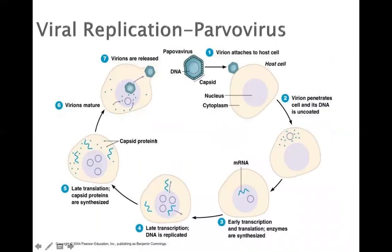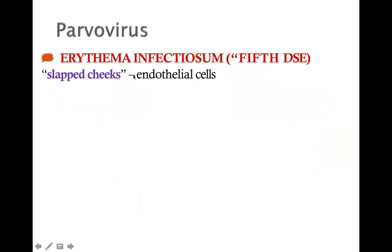This is the viral replication of the parvovirus. The first step: the virus attaches to its host cell. The virus penetrates the cell and its DNA is uncoated. Once uncoated, its mRNA undergoes early transcription and translation, and enzymes are synthesized. After this step, late transcription occurs — DNA is now ready for replication. Once replication takes place, capsid proteins are synthesized. Once there are capsid proteins, the virus matures and is released into the circulation for viral multiplication and infection.